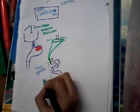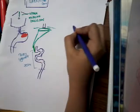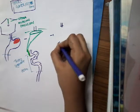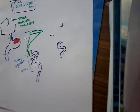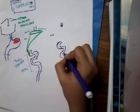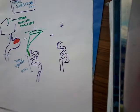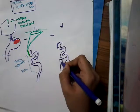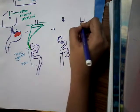From the Treitz ligament, you measure approximately 75 centimeters and cut there. Once you dissect here, you will have the upper end and the lower end with the duodenum. The distal part of the jejunum is then joined to the esophagus.